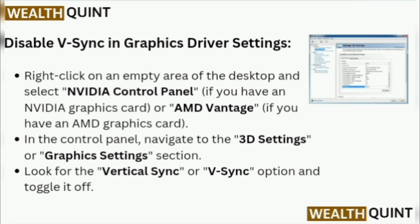Right-click on an empty area of the desktop and select NVIDIA Control Panel if you have an NVIDIA graphics card, or AMD Vantage if you have an AMD graphics card. In the control panel, navigate to the 3D settings or graphics settings section. Look for the Vertical Sync or V-Sync option and toggle it off.